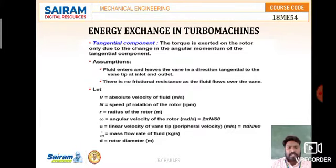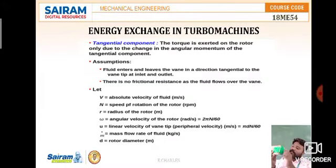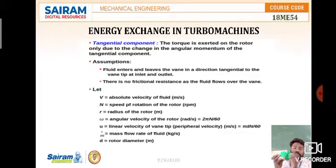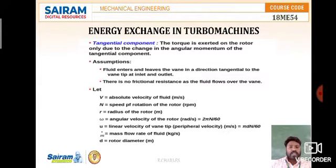Small r is equal to the radius of the rotor. Imagine a circular rotating component — small r is nothing but the radius of that rotor, measured in meters.